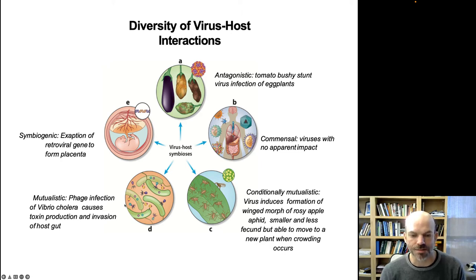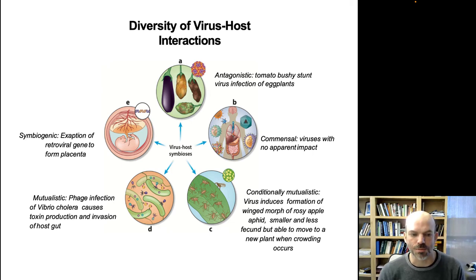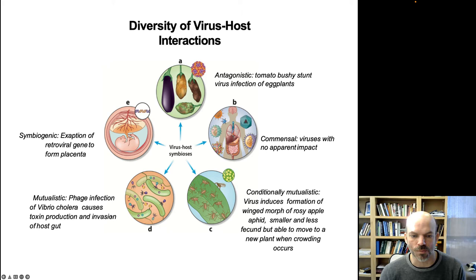A virus infection can actually have a beneficial effect. There's the example of some aphids — when they are infected by viruses, they're actually better able to colonize a new plant. Cholera is caused by the bacterium Vibrio cholerae, which is very common in the ocean, and it normally does not produce the toxin that causes cholera when it infects people. But when it's infected by a particular virus, it becomes capable of making the toxin and colonizing a host gut. So it's really the phage and the bacterium working together to cause cholera — a mutualistic relationship between the virus and bacterium, though of course not mutualistic for humans.